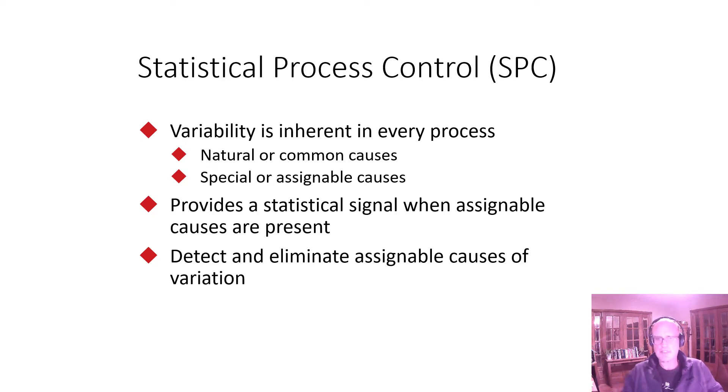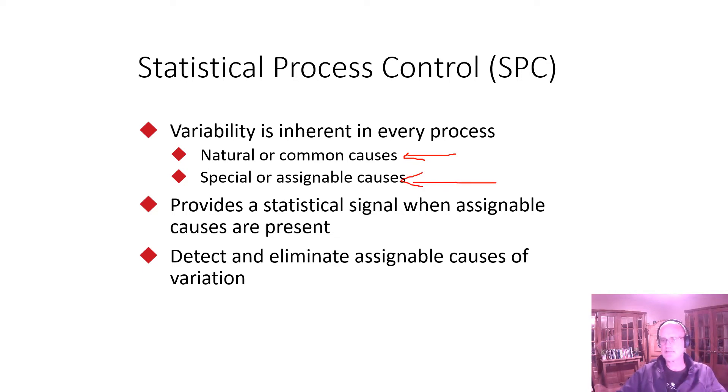Whenever we do something, there is some natural variation. We cannot do things exactly the same every time. Because we are unable to do things exactly the same every time, the process can't yield the same thing every time. So we have some variation. What we're trying to do with statistical process control is differentiate between natural variation, the variation we expect and that we see and that is acceptable, or the special or assignable causes of variation. These are things that have changed in our process. They're not the common variability. There's when something has gone wrong. And that's what we're trying to highlight with statistical process control.